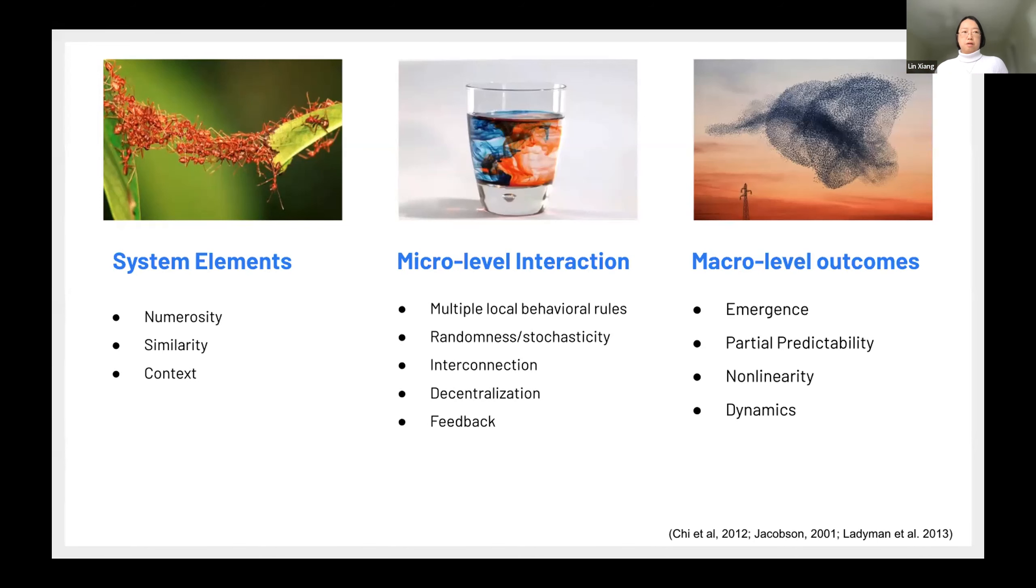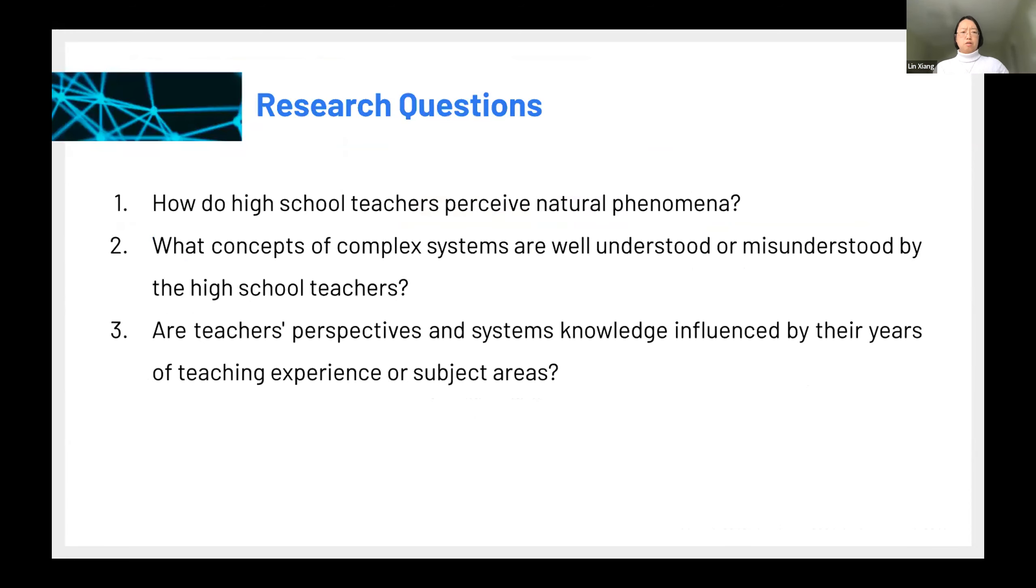Then when we move to the macro level outcomes, then we want to recognize the emergence there. So we should know this emergence is not just simply adding up the individual behavior, it's a collective result. And these results can only be partially predicted. And these changes often are not linear. And all these outcomes can be dynamic, they're not static. So you can see there are a list of concepts we need to know in order to think about complex systems. So our question here, we really want to know how do high school teachers perceive natural phenomena? What concepts of complex systems were well understood or not well understood by the high school teachers? And also we wonder if teachers' years of teaching experience or their subject area influenced their knowledge and perspective.